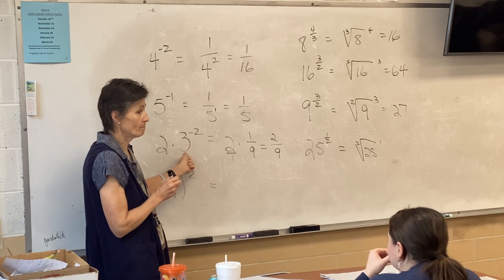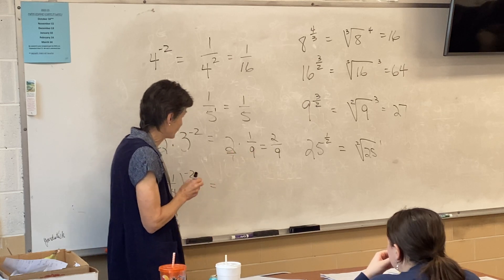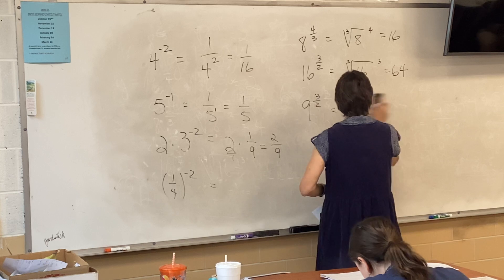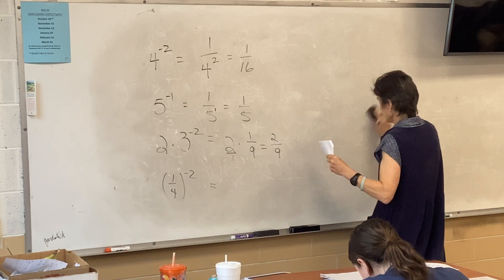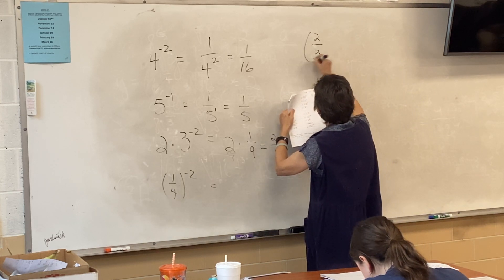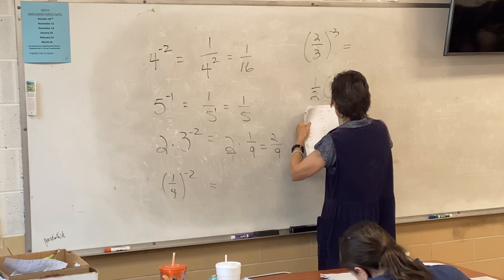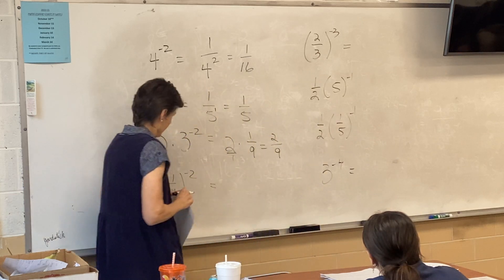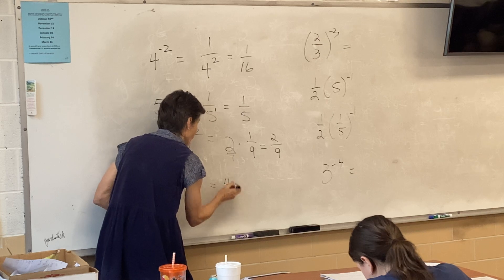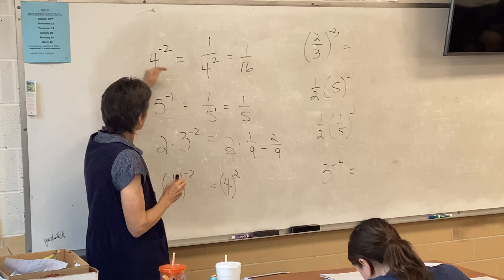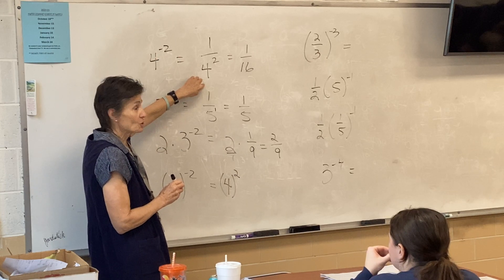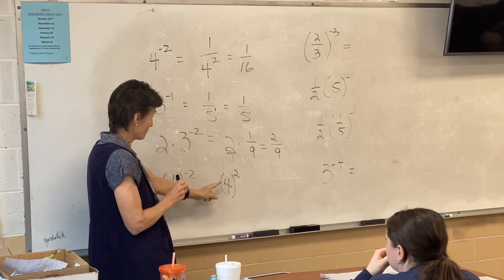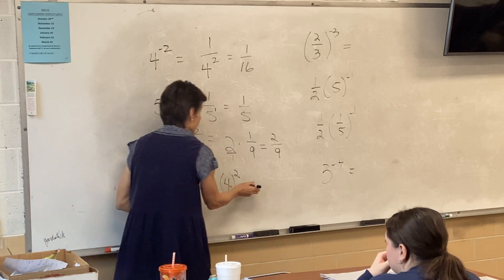This is a multiplication problem — one over nine, so two times one-ninth. What about this one? What happens to that fraction since it has a negative exponent? It's going to flip. So instead of one-fourth to a power, we make it four over one to the second. Remember, the negative took it to the denominator; if it's already in the denominator with a negative, it goes to the numerator. So this becomes four to the second, which is 16.